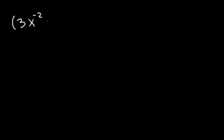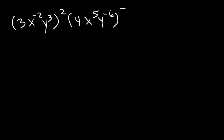Let's try another example: 3x to the negative 2 times y cubed, raised to the 2nd power, multiplied by 4x to the 5th power, y to the negative 6, raised to the 3rd power. First, let's distribute the exponents. Multiply 1 by 2, negative 2 by 2, and 3 by 2. So 1 times 2 is 2, negative 2 times 2 is negative 4, and 3 times 2 is 6.